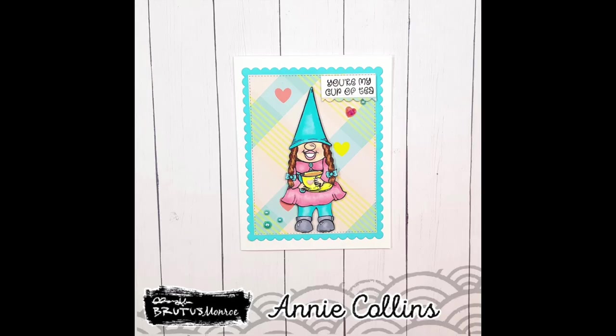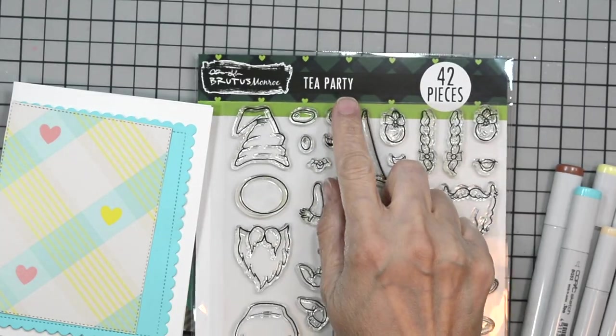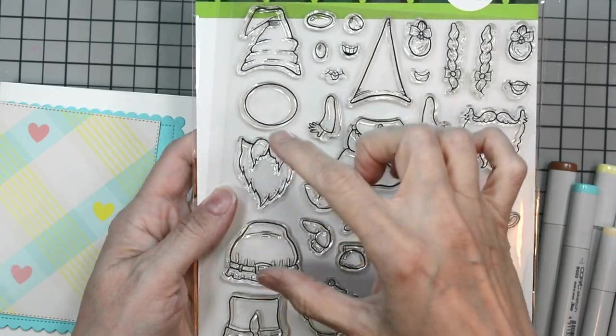Welcome! It's Ana here for Brutus Monroe. Today we're going to create this gnome and tea inspired card. Let's go over the products I use. I use Tea Party, which is a 42-piece stamp set that consists of building gnomes.